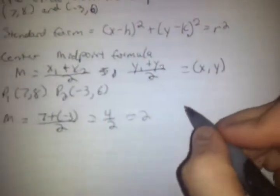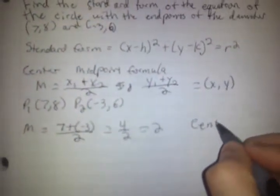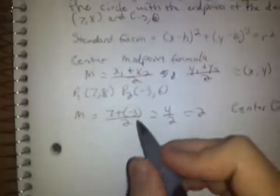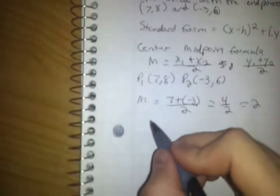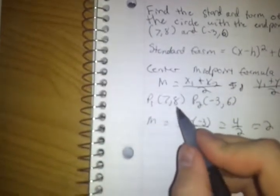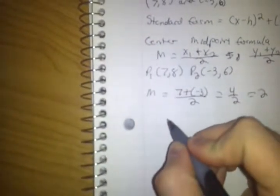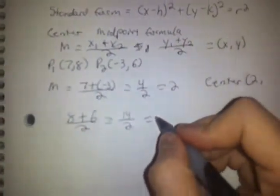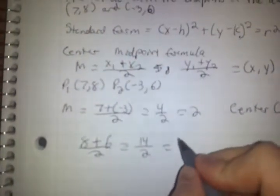To figure out the y-coordinate, the y-axis is going to be the second point, so we have (8 + 6)/2, which equals 14/2, which can be simplified down to 7. So our center is (2,7).